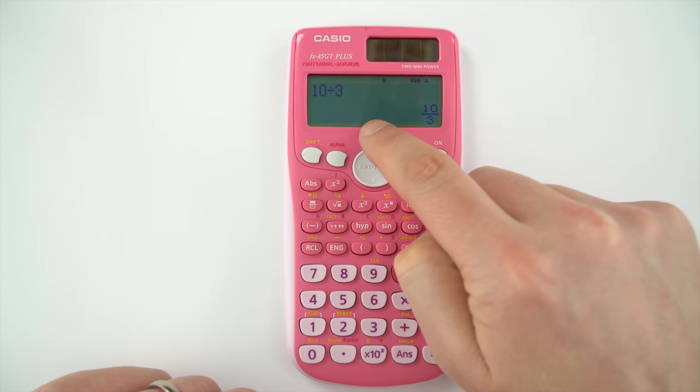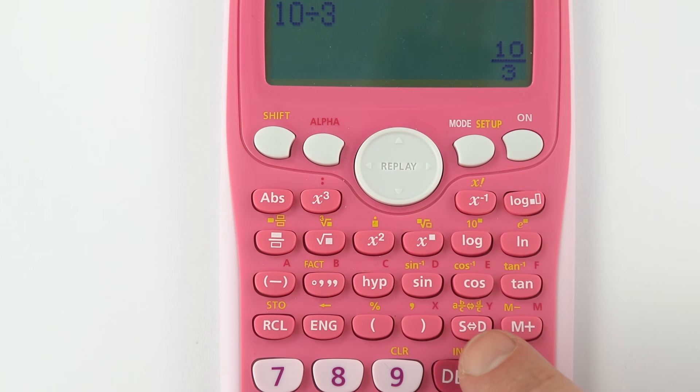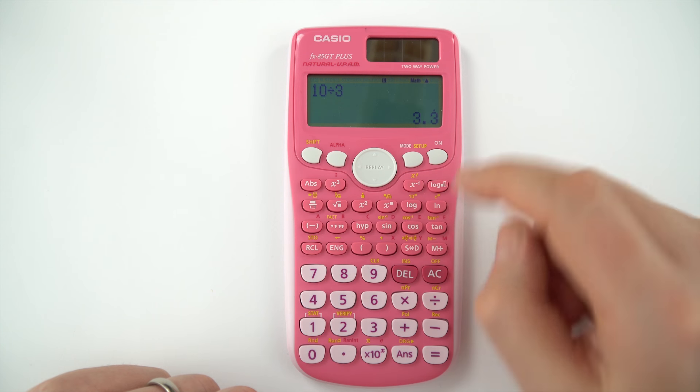Now the way to get this to display a more conventional number is to press this button down here, S to D, and then it gives 3.3 recurring. But there must be a simpler way without having to always press this button at the end of every calculation.